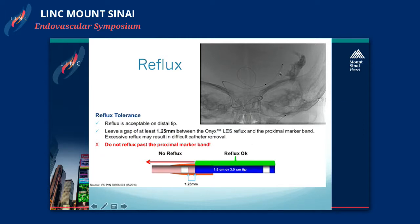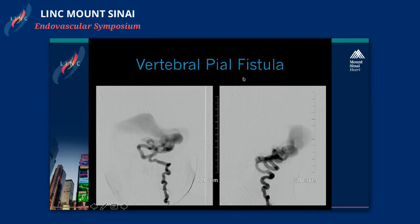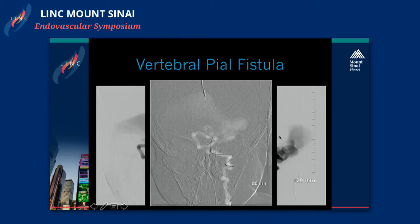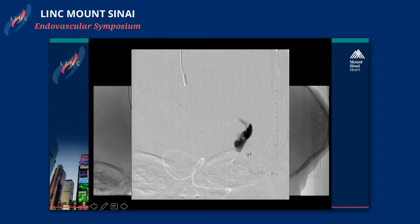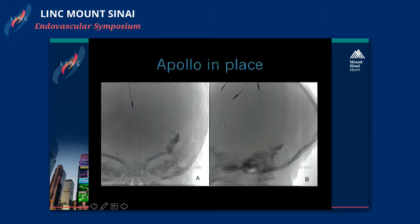This catheter comes with two tips. The proximal marker is where the detachment zone is, so if you reflux all the way to that point during injection, you have to stop or you'll glue that detachment zone in place. This is an example of a vertebral pial fistula — an AP and lateral view of the vertebral artery in the neck and its fistulous connection to a posterior fossa vein. The Apollo catheter is navigated to the fistula, and NBCA is injected. This catheter can be used with both NBCA and Onyx.